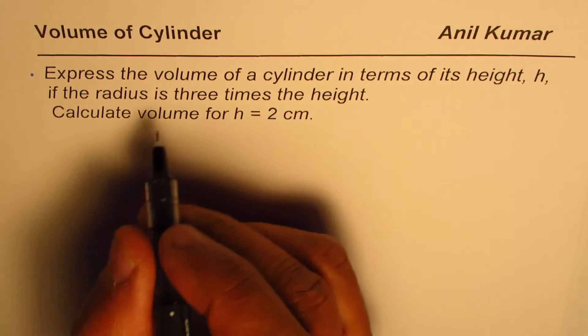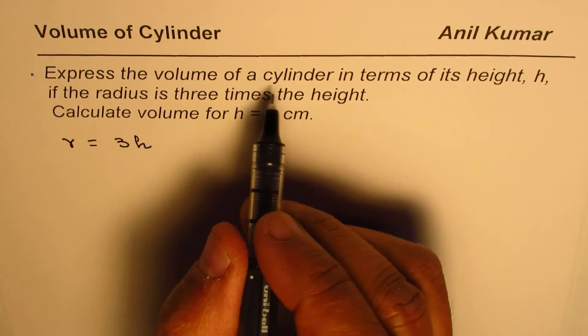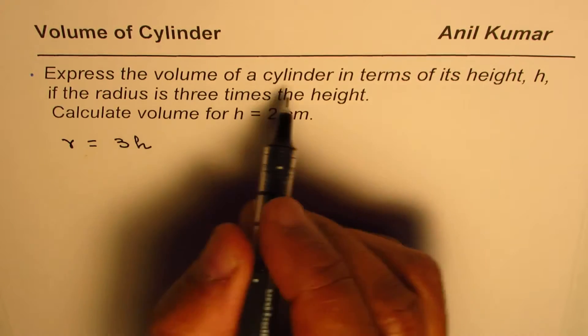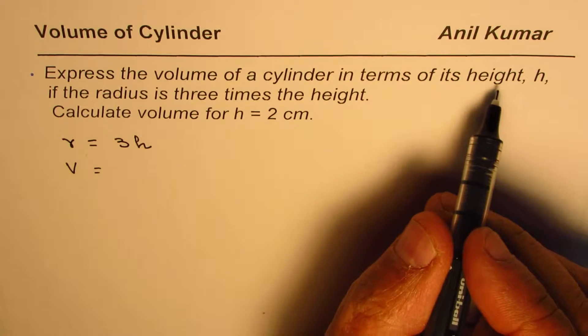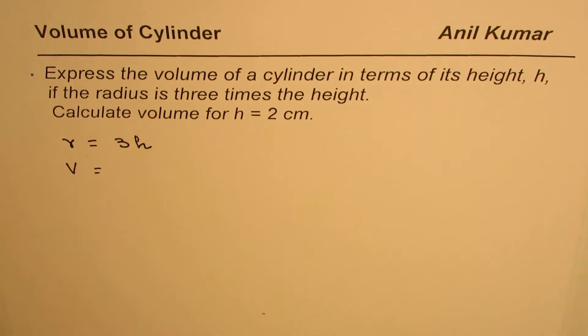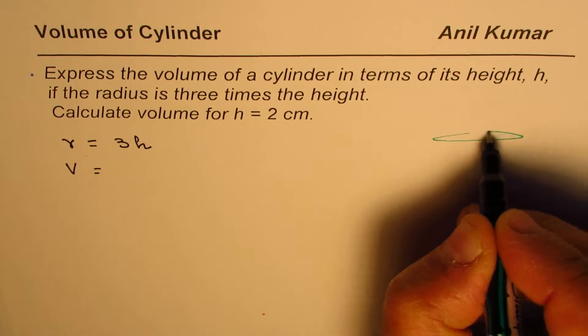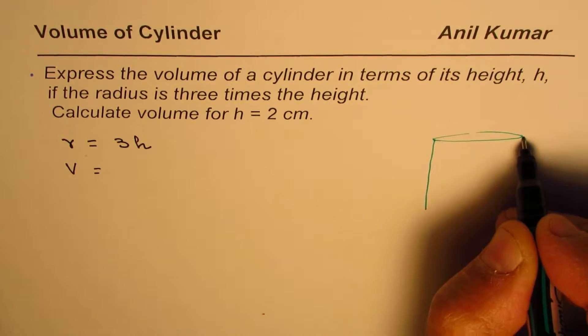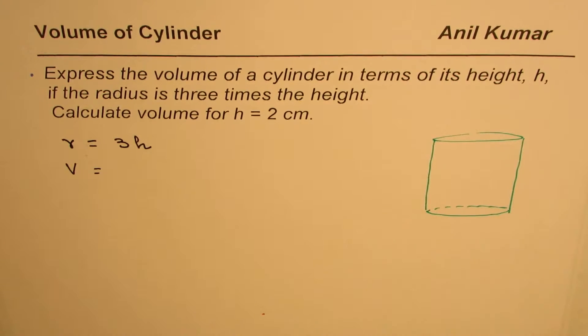So what we are given here is that the radius is three times the height, and we need to express the volume of a cylinder in terms of height. Now let me make one cylinder and then we'll discuss the question further. So let's say that is a cylinder for us, and let's define our variables.